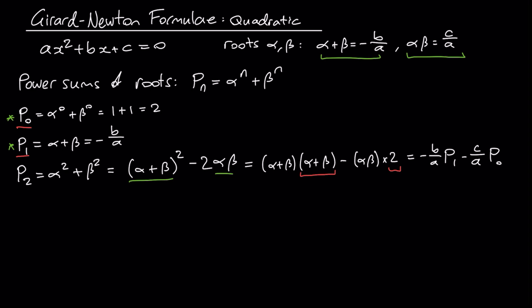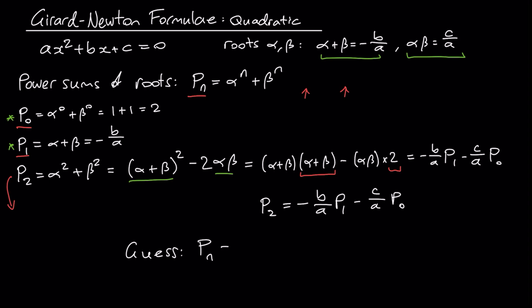What I really want for the Girard-Newton formulae is to generate a recurrence relation for Pn in general — a way of writing Pn in terms of Pn minus 1, Pn minus 2, and perhaps other quantities. I've noticed that P2 equals minus b over a times P1, minus c over a times P0. So I might guess that in general: Pn equals minus b over a times P(n minus 1), minus c over a times P(n minus 2).